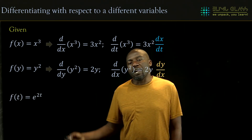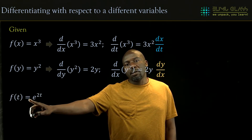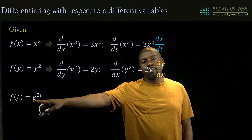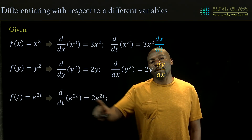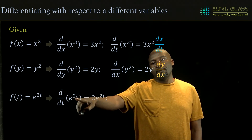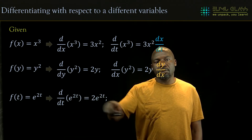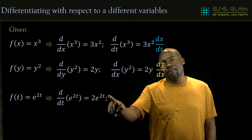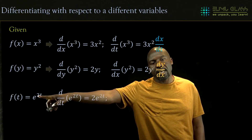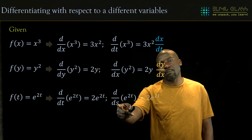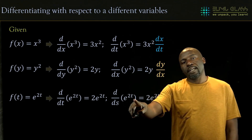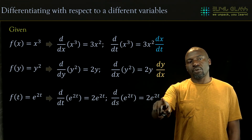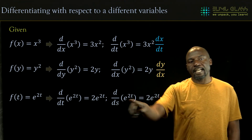Likewise, if we have e to the power 2t and differentiate with respect to t, we get 2e^(2t) with dt/dt cancelling off. But if we differentiate the same function with respect to some new variable s, we get 2e^(2t) with a residue dt/ds that cannot cancel.